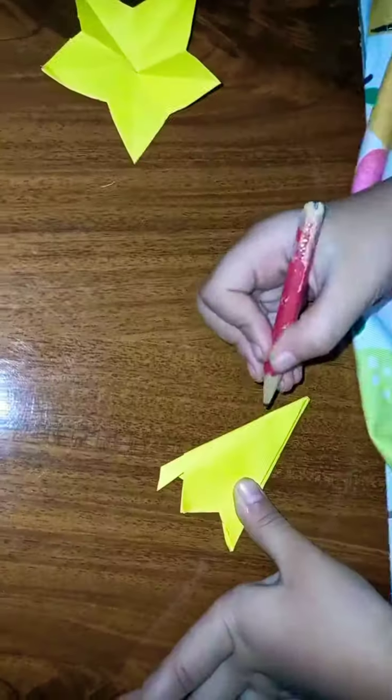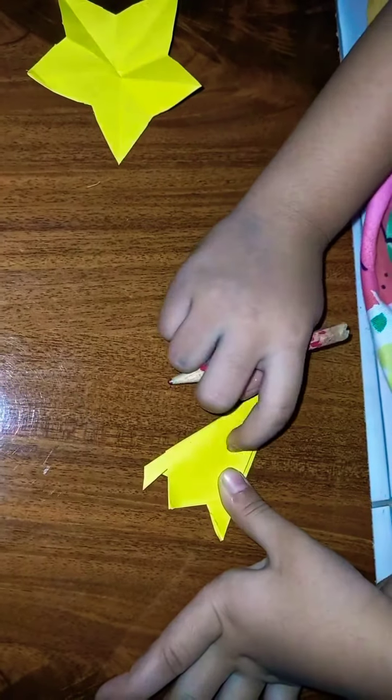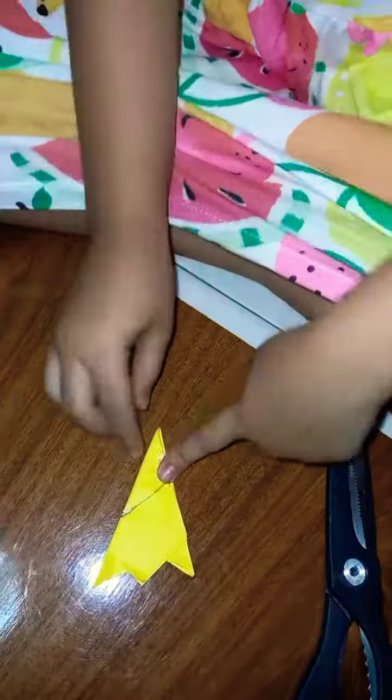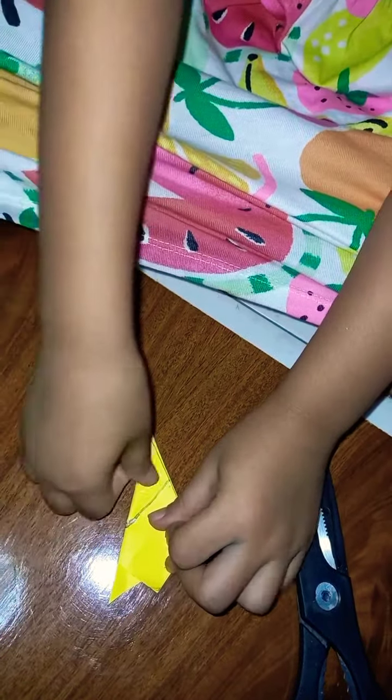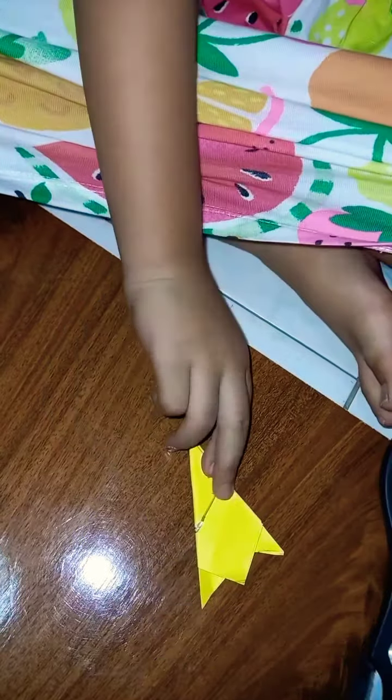So now we will mark a tilted line like this. So I draw the line. This one, this one should be up and this one should be down. And then we will cut along the line.